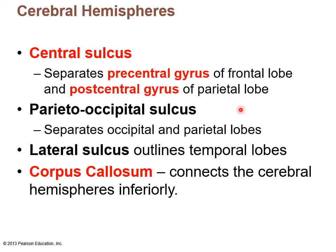Important fissures to remember: the longitudinal fissure separates the right and left cerebral hemispheres, and the transverse cerebral fissure separates the cerebrum from the cerebellum. Important sulci include the central sulcus, which separates the precentral gyrus in the frontal lobe from the postcentral gyrus in the parietal lobe. The frontal lobe is associated with motor output and the parietal lobe with sensory input. The lateral sulcus outlines the temporal lobes.